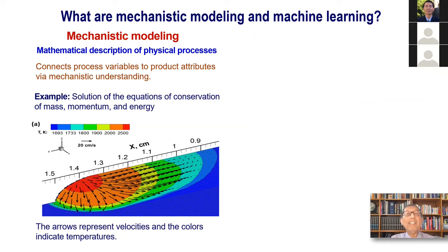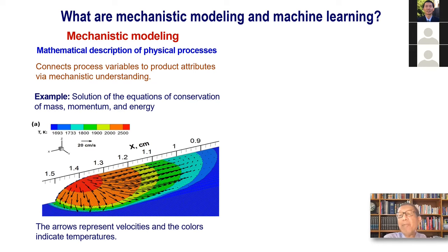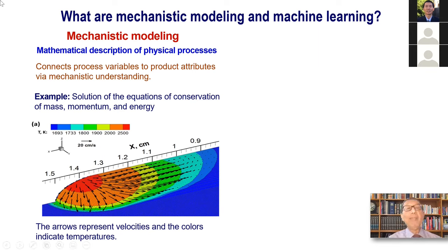What is mechanistic modeling, and why do we need it along with machine learning? Mechanistic modeling is a mathematical description of a physical process. Say I am heating a bed of powder with a laser beam and I want to calculate the temperature there, because the temperature will determine cooling rates, and cooling rates will determine microstructure and properties. A mechanistic model connects process variables like speed, power, particle size, and powder feed rate to product attributes like microstructure and properties.